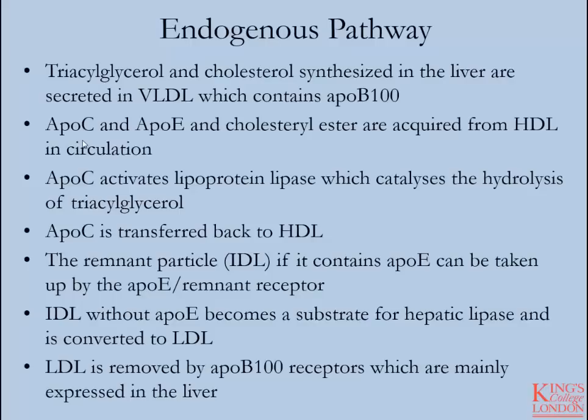At some point in the conversion from VLDL to LDL, ApoC is transferred back to HDL. The remnant particle — more specifically intermediary density lipoprotein or IDL — if it contains ApoE, can be taken up directly by the liver via the ApoE/remnant receptors. However, if it does not, the ApoE is lost again to HDL and hepatic lipase will continue to act on this IDL to liberate even more triglyceride, until you have a very cholesterol-rich LDL particle.